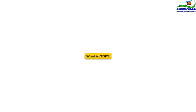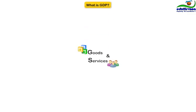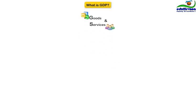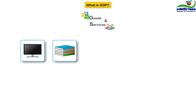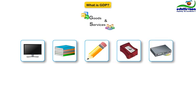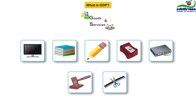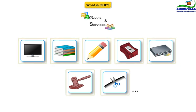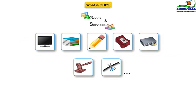In any given year, people in the economy produce goods and services. They produce television sets, books, pencil sharpeners, DVD players, attorney services, haircuts and much more. Have you ever wondered what the total dollar value of all those goods and services is?